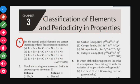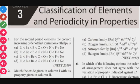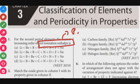First question, question number 1: For the second period elements, what is the correct increasing order of first ionization enthalpy? Ionization enthalpy is increasing period-wise.